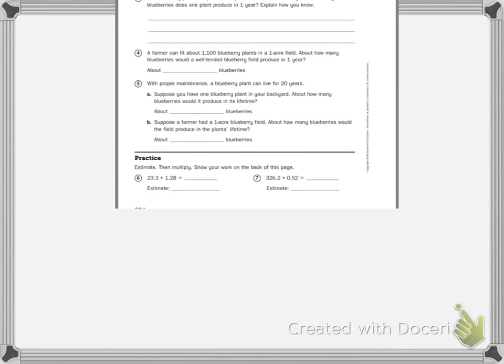Problem four: A farmer can fit about 1,100 blueberry plants in a one acre field. About how many blueberries would a well tended blueberry field produce in one year? So you need to take your answer from three and multiply it by 1,100.